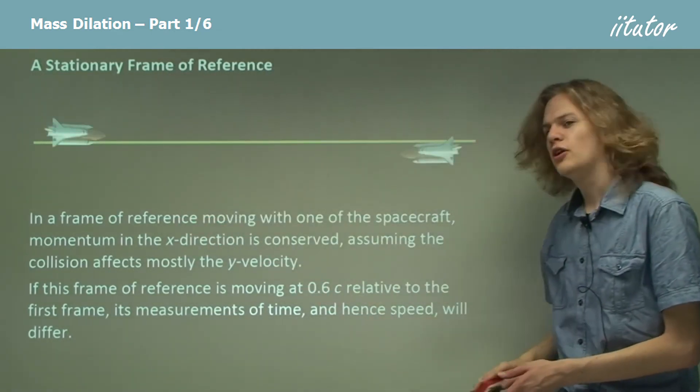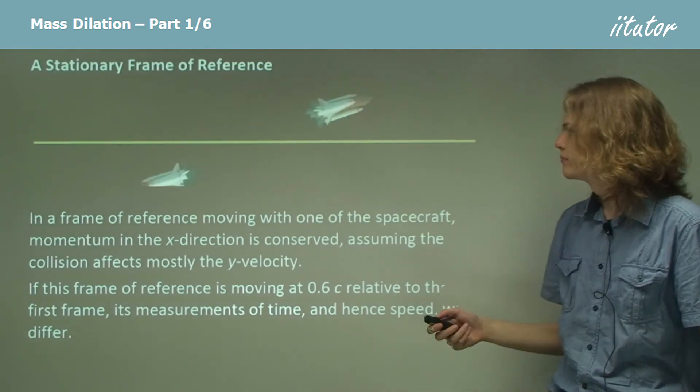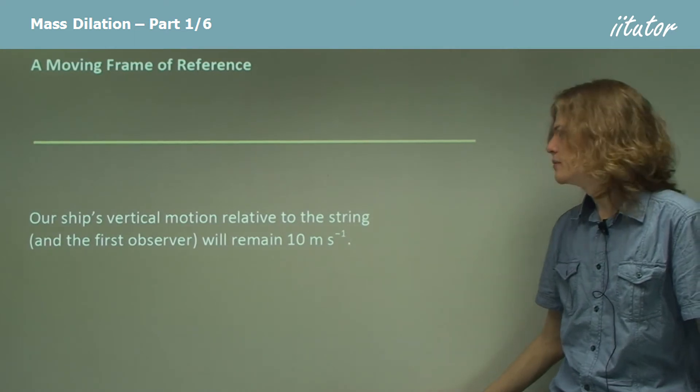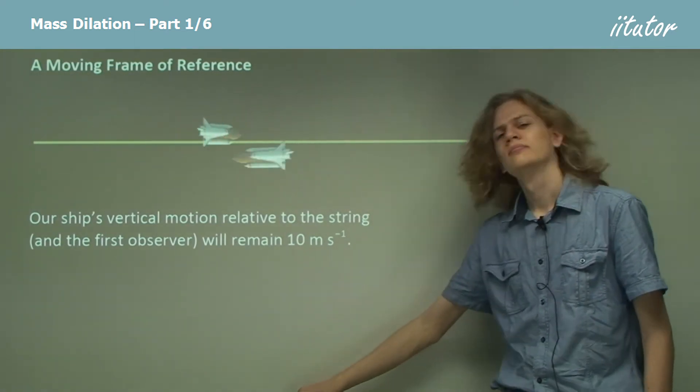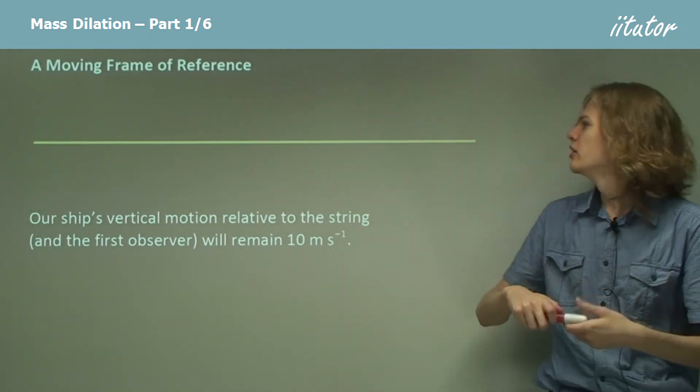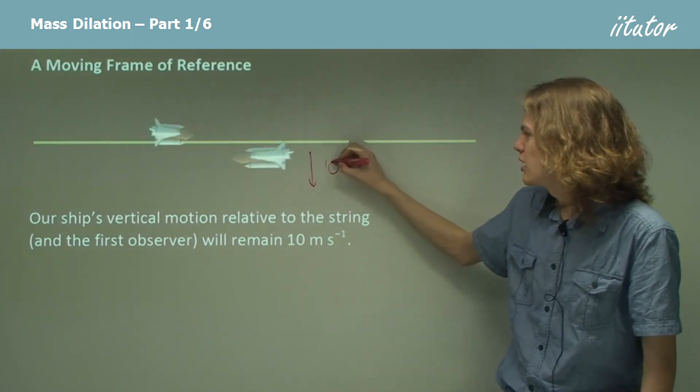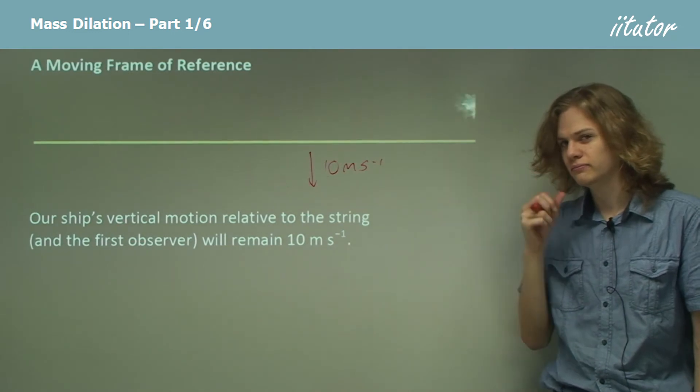So, let's go into the frame of reference of the bottom spaceship. So now, as you can see, we start off as stationary. Now, if we look at what the first observer saw when the spaceships collided, we know that after the collision, we're moving down at 10 meters per second.